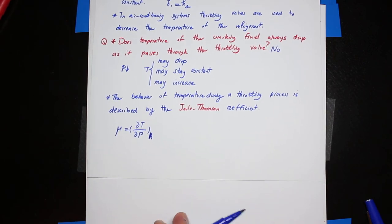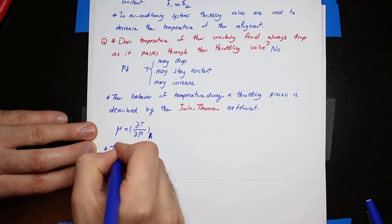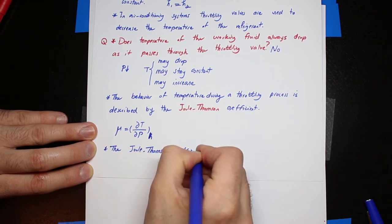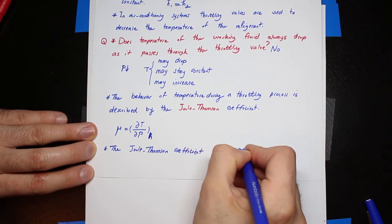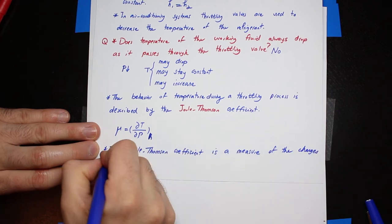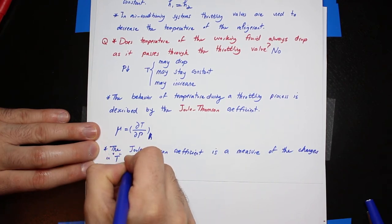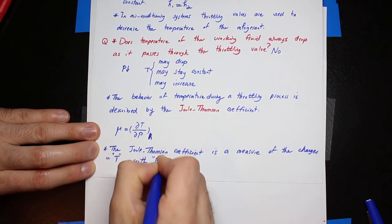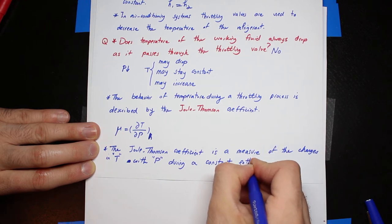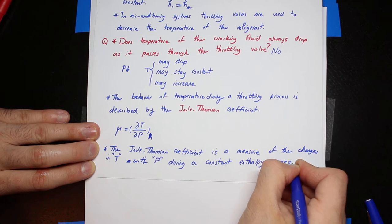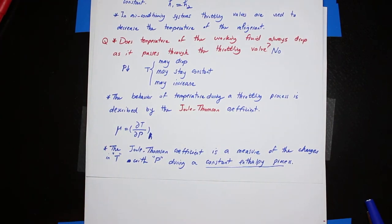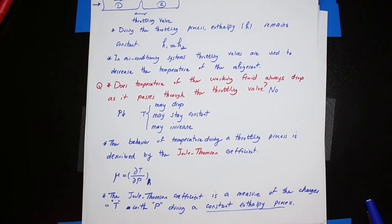The Joule-Thompson coefficient is a measure of the changes in temperature T with pressure P during a constant enthalpy process. The fact that we write H as a subscript tells us that enthalpy remains constant during the process. This μ value can have three different signs.